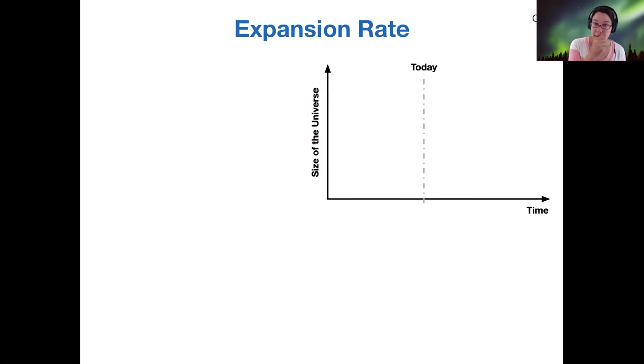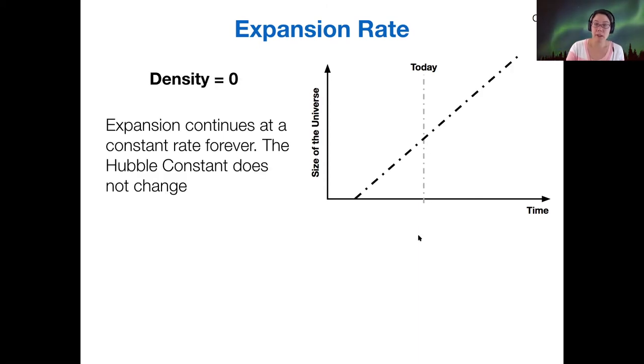All right. So I'm going to try to walk through a new representation of those four models, but now we're going to put it on this particular graphic representation. So what we're looking at here is the size of the universe versus time. And this dashed line will represent our present day.